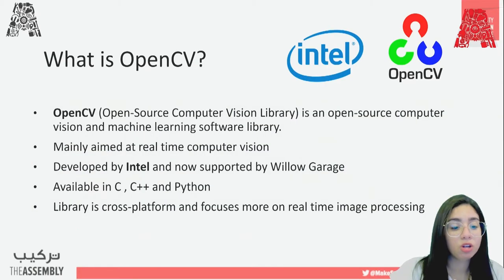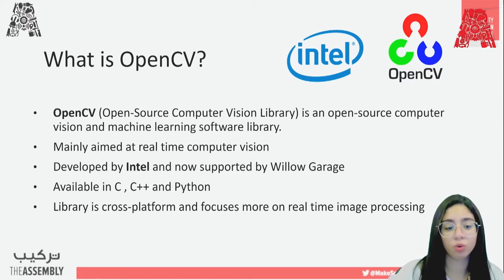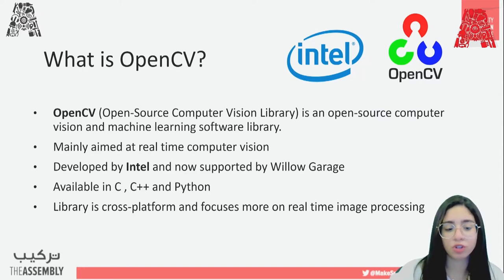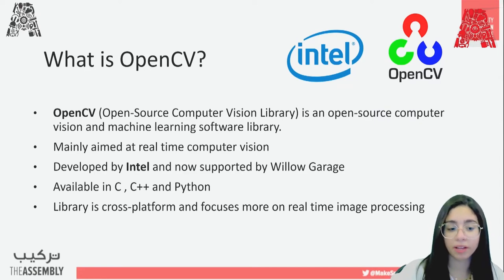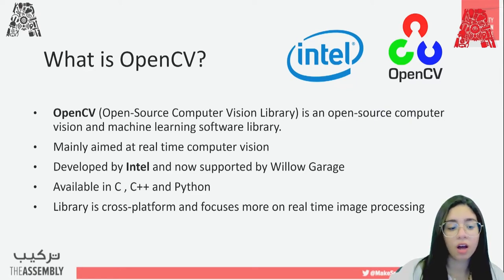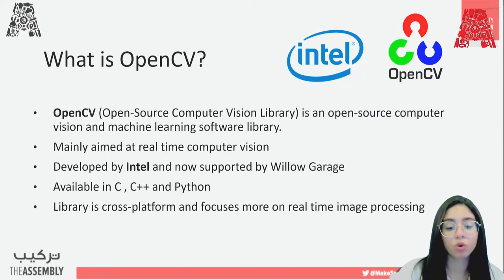Our workshop uses a library called OpenCV — Open Source Computer Vision. As the name implies, it's used in computer vision and machine learning software. It is mainly aimed at real-time computer vision. It was developed by Intel, now supported by Willow Garage, and is available in C, C++, and Python. We'll use Python today. It's a cross-platform library focused on real-time image processing.